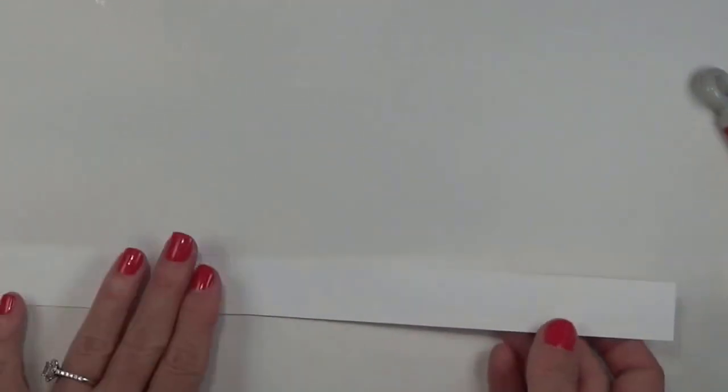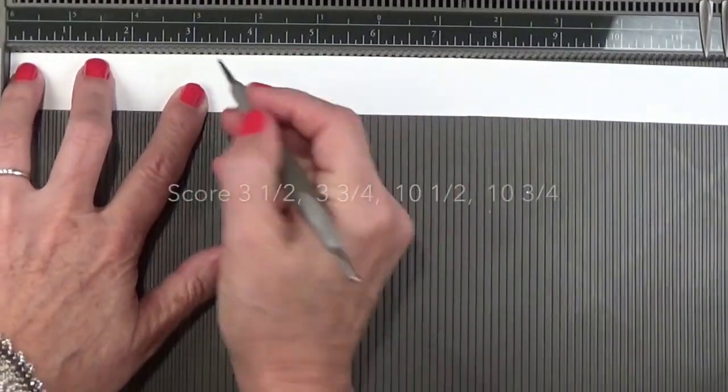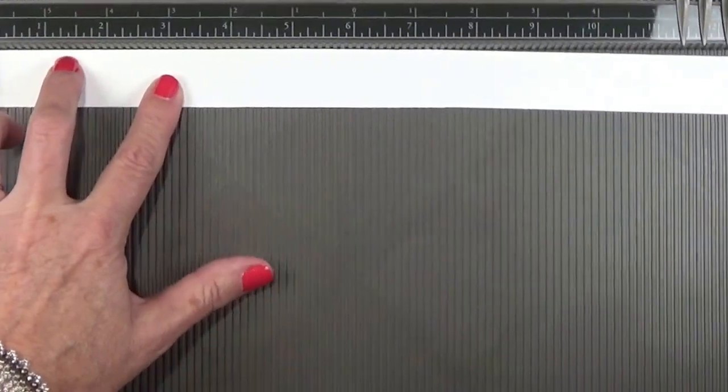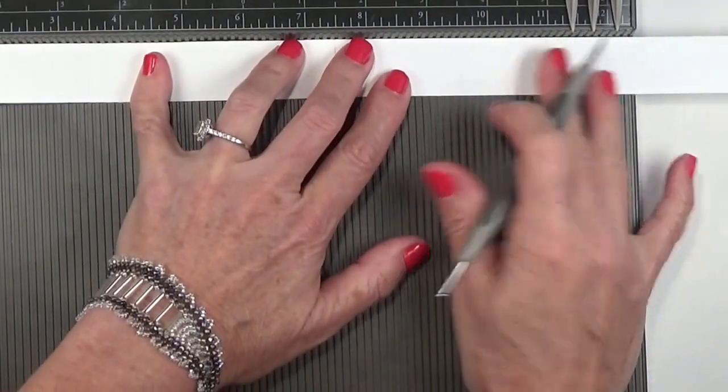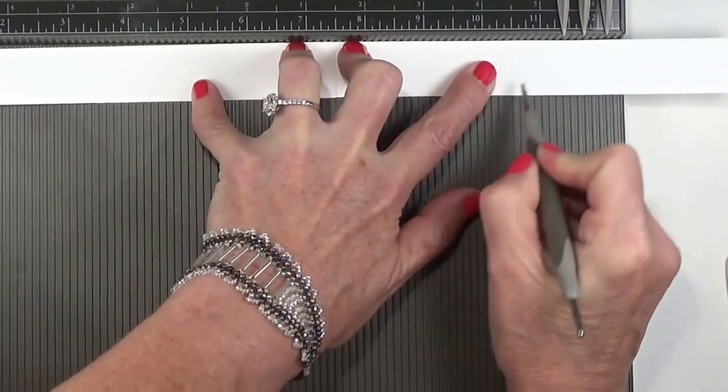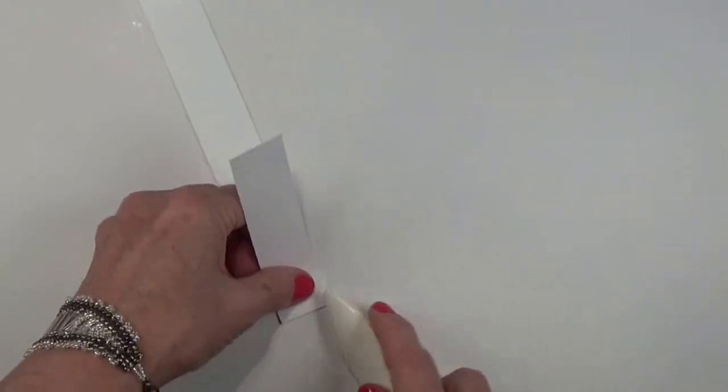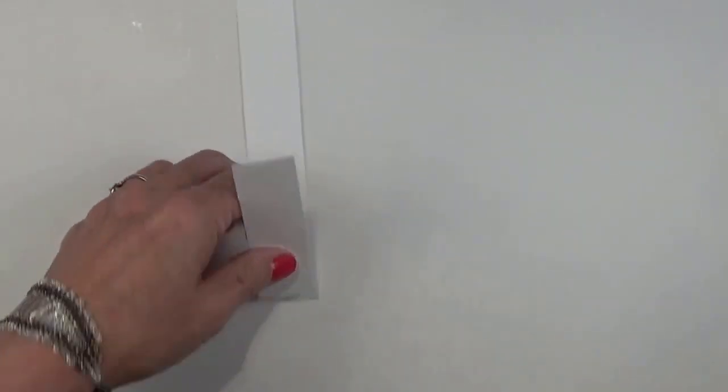I know it's hard to see because it's white paper on a white background. Then this is actually going to be scored as well. This piece is scored at three and one half, then at three and three fourths, then at ten and one half, and ten and three fourths. I'm gonna go ahead and fold and burnish these score lines as well.